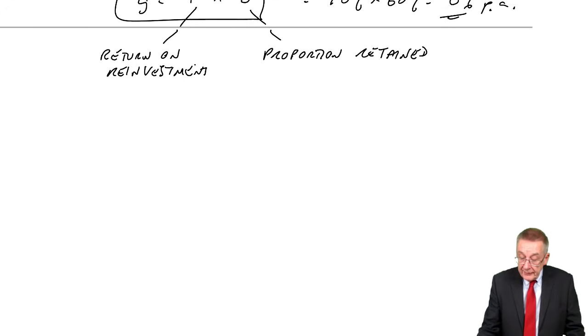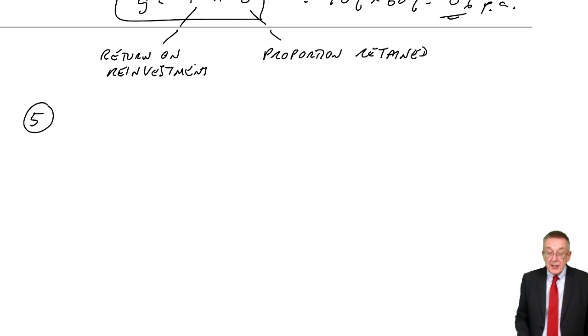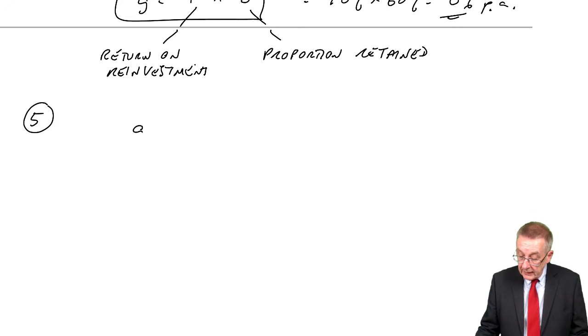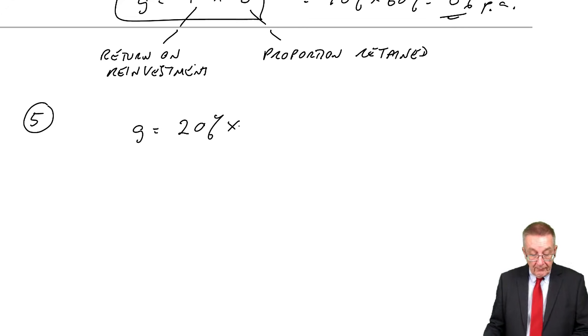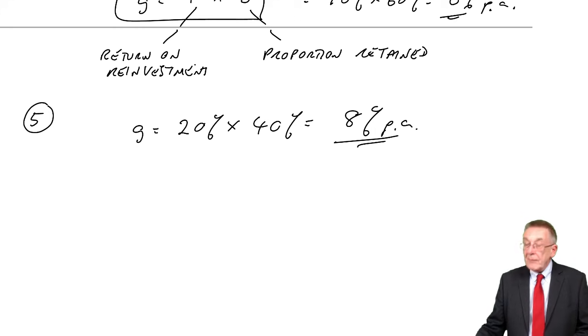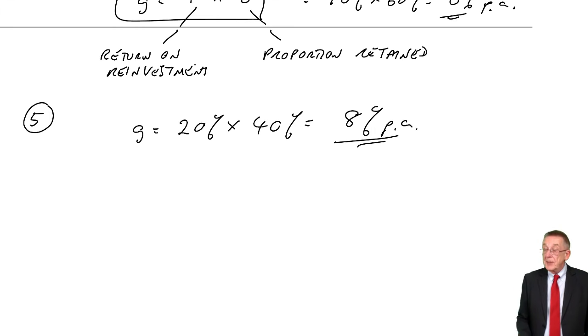Example 5. Y retains 40% each year. Reinvest those to earn 20% a year. What's the expected growth rate? The return on investment, 20%. The retention, 40%. You'll be expecting dividend growth, therefore, at 8% per year.